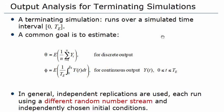Any terminating simulation runs over a simulated time interval — it will start from time 0 and end at TE. Consider a terminating simulation that runs over a simulated time interval 0 to TE and results in observations Y1, Y2 till Yn. The sample size n may be a fixed number or it may be a random variable.